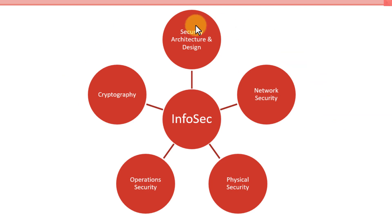We already talked about application security; now security architecture and design. There's a little overlap, but this is a broader sense — the entire architecture and design of our IT infrastructure: our applications, our systems, our network, all the software on our network. From an enterprise architecture perspective, we need to make sure that security is baked in and not an afterthought. Segueing to network security, which is a subset of this, it's also part of network operations and IT security operations where we monitor what's going on.